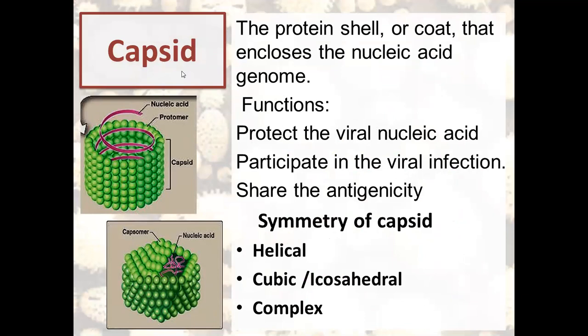The next component of the viral particle is the capsid — a protein shell that encloses and protects the viral genome. It is composed of protein subunits named capsomers, arranged in order around the nucleic acid. The viral capsid may have helical symmetry or cubic/icosahedral symmetry. The functions of the capsid are protection of nucleic acid from environmental factors, participation in viral infection by transporting viral DNA or RNA into the cell, and antigenicity — these viral proteins are antigens that interact with the human immune system.